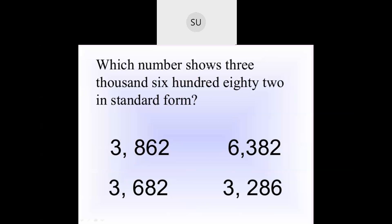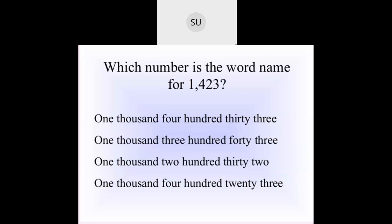For 3682: in the thousands place we have 3, so we can eliminate options without 3 there. Then 600, so hundreds place has 6. So 682 means 8 in tens place and 2 in ones place — giving us 3682. Then which is the number name for 1423? 1 is in thousands place (1000), 4 is in hundreds place (400), 2 is in tens place (20), and 3 is in ones place (3). So 1423 — that is the last option, the number name for the given number.